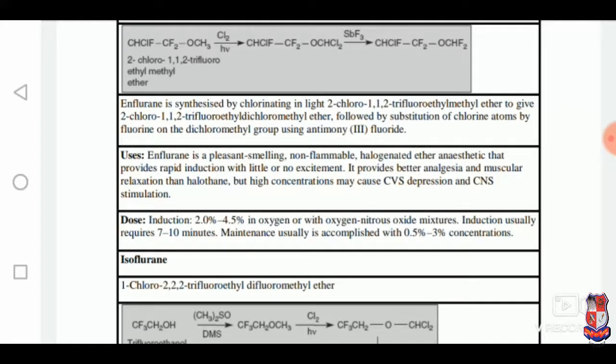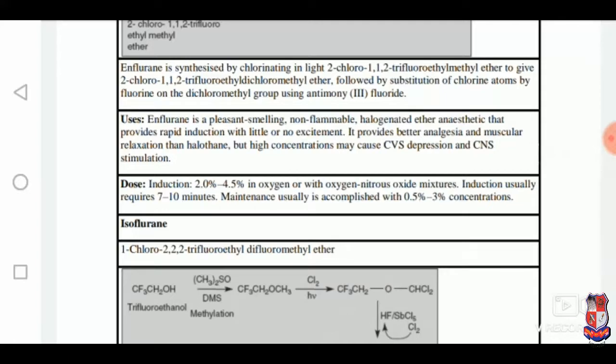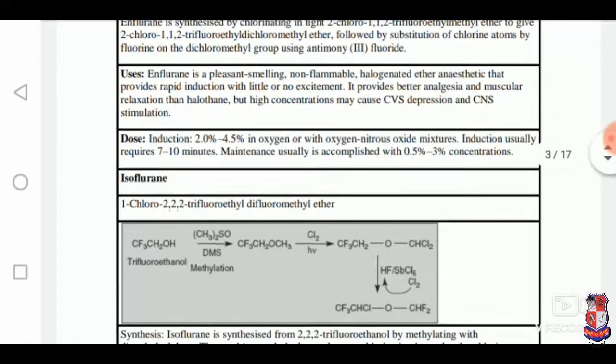Enflurane is a pleasant smelling, non-inflammable, halogenated ether anaesthetic that provides rapid induction with little or no excitement. It provides better analgesia and muscular relaxation than halothane, but high concentration may cause cardiovascular depression and CNS stimulation. Dose: induction dose of 2% to 4.5% in oxygen or with oxygen-nitrous oxide mixtures. Induction usually requires 7 to 10 minutes. Maintenance usually is accomplished with 0.5% to 3% concentration.